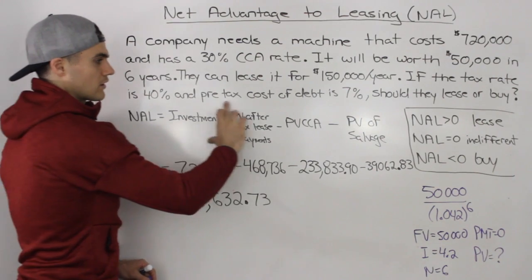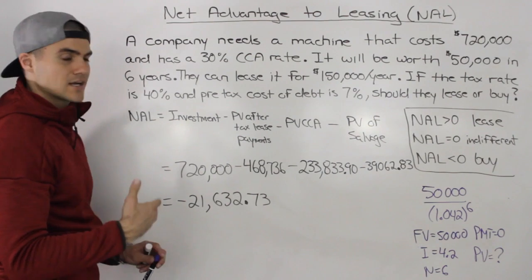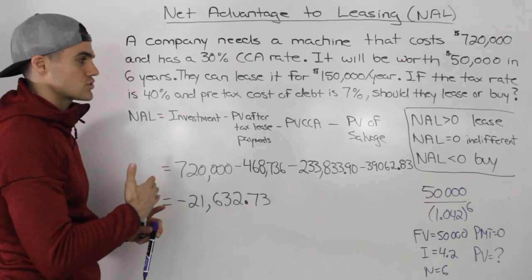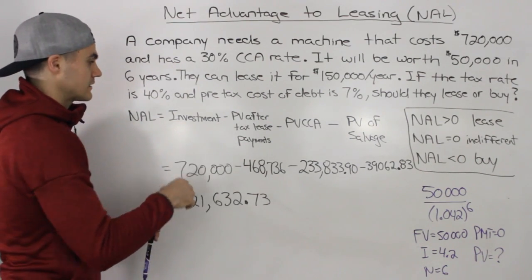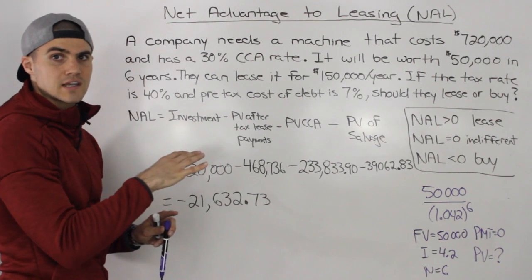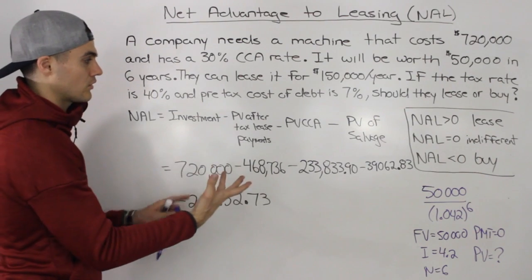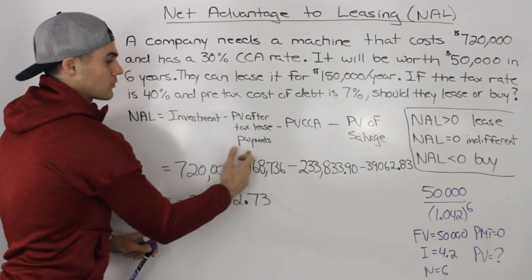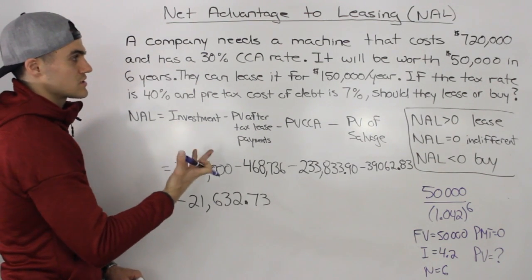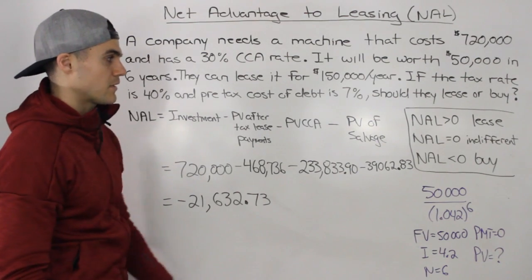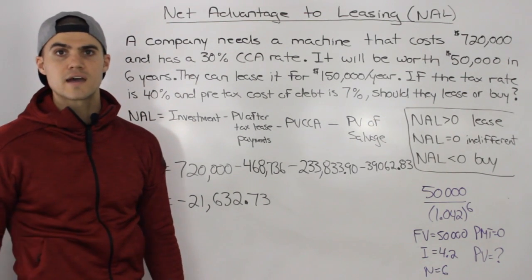This expanded formula is the one you're mostly going to be using. The NAL is essentially the net present value of leasing an asset minus the net present value of buying, and when you input all the details, it becomes: NAL = Investment − PV(after-tax lease payments) − PV(CCA tax shield) − PV(salvage). Depending on whether your NAL is positive, zero, or negative, you'll know whether to lease or buy the asset.